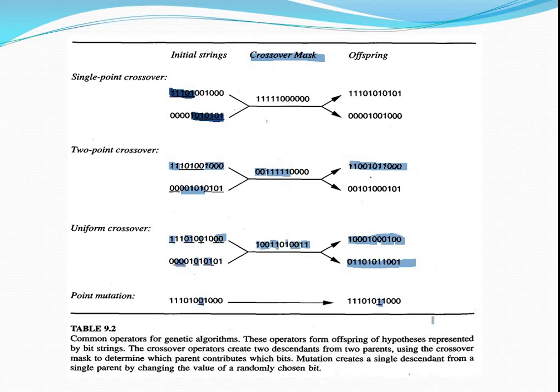In single point crossover, the crossover mask contains continuous ones and continuous zeros, generating two new offspring. In two point crossover, the crossover mask contains intermediate segments of ones and zeros and generally starts with zeros. In uniform crossover, ones and zeros are distributed uniformly, and two new offspring are generated accordingly. The mutation operator uses only one parent and generates one new offspring by randomly choosing a bit and changing its value. These are the two genetic operators used to produce the new or next generation population.